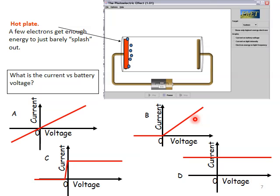All right, so here's our photoelectric experiment. What we're going to do is we're going to have a hot plate here. So a few electrons are going to get enough energy to just barely splash out. What I want you to predict is what is the current versus battery voltage graph. You have three or four graphs to choose from. You have graph A, graph B, graph C, and graph D. So pause the podcast and see if you can figure out what the current versus battery voltage should be for the photoelectric effect if you heat up one plate.